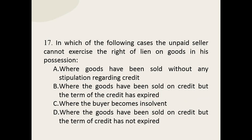Q17: In which of the following cases can the unpaid seller not exercise the right of lien on goods in his possession? The options are: where goods have been sold without any stipulation regarding credit; where the goods have been sold on credit but the term of credit has expired; where the buyer becomes insolvent; where the goods have been sold on credit but the term of credit has not expired. The correct option is: where the goods have been sold on credit but the term of credit has not expired.